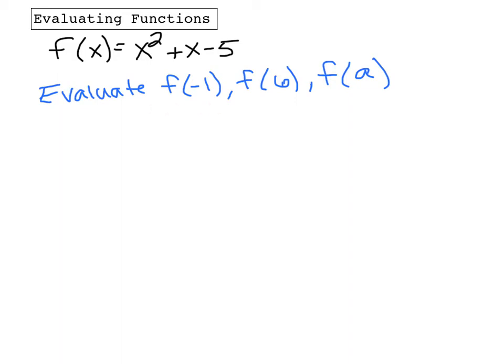For this equation, we have f of negative 1. We're just going to replace negative 1 everywhere we see an x. And then we just simplify. So negative 1 squared is 1 plus negative 1 is minus 1, minus 5. And we're left with negative 5.